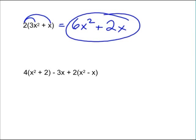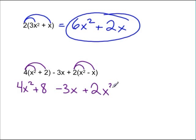Now let's look at this one. We can distribute the 4, so we get 4x² + 8. That minus 3x, nothing happens to that. And now I can distribute the 2 to that binomial, so plus 2x² minus 2x. There you go.